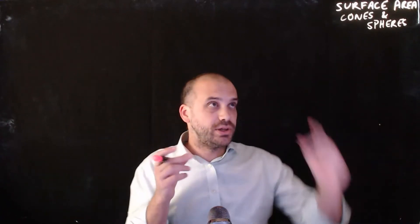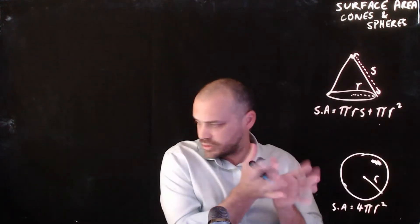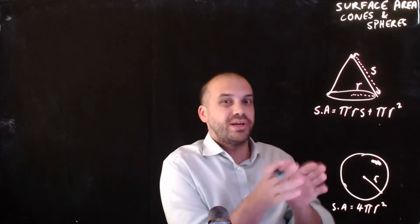So we're still looking at surface area, this time we're looking at cones and spheres. Now I'm going to give you two formulas here: cones, there's a cone, and spheres. So now that we've got these two formulas, let's talk about them in turn.